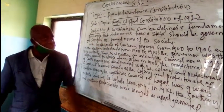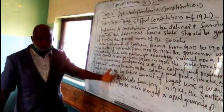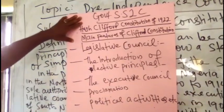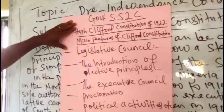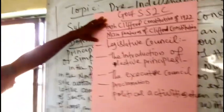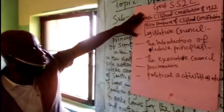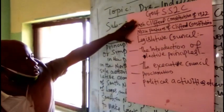Now let us look at the main features of the Clifford Constitution — what it brought to Nigeria. The Clifford Constitution of 1922 had the following main features: Number one, the legislative council, which is equivalent to the national assembly today. Number two, most importantly, the introduction of the elective principle — that is the major thing that the Clifford Constitution did for this country.